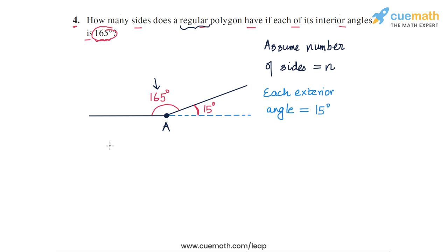Now this means that we can write the total sum of all the exterior angles in terms of the number of sides, because we have the measure of each angle, which is 15 degrees, and we have the number of exterior angles, which is n. So the total sum of all the exterior angles of the polygon will be equal to n, the number of exterior angles, into 15 degrees, which is the measure of each exterior angle.